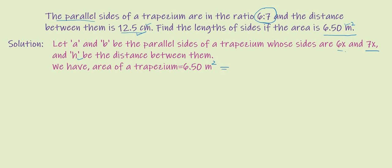We'll convert to the same unit. Convert the area to centimeter square: 6.50 m² will convert by multiplying by 10,000. So we have the distance between the parallel sides, so h is 12.5 centimeter.